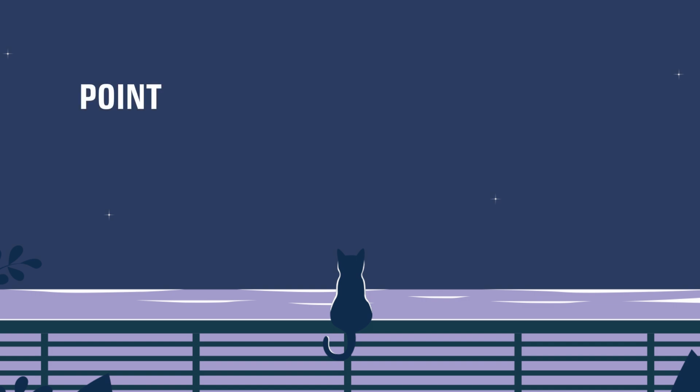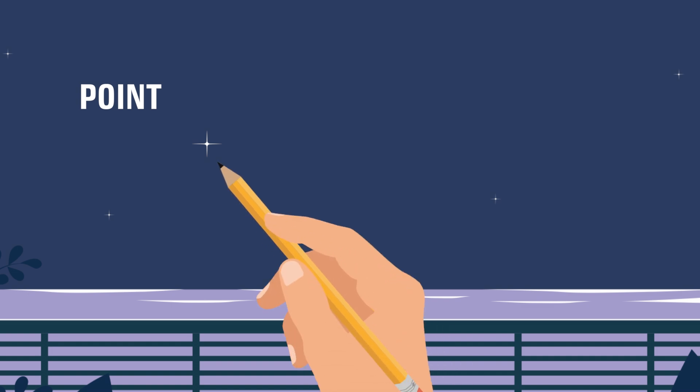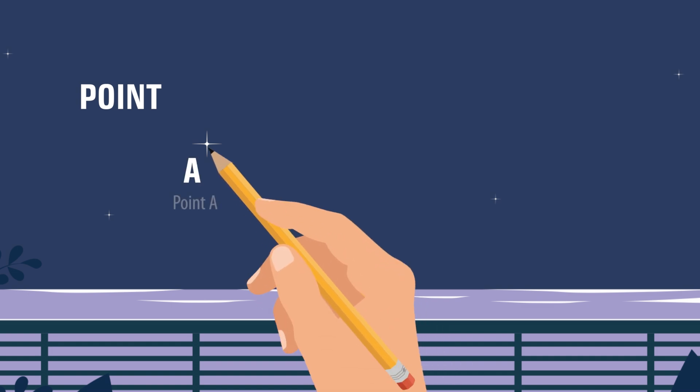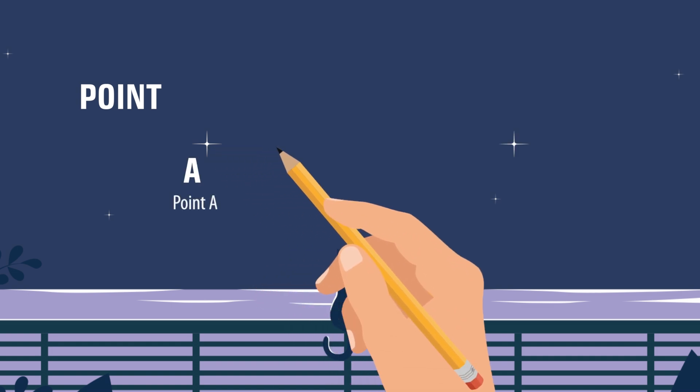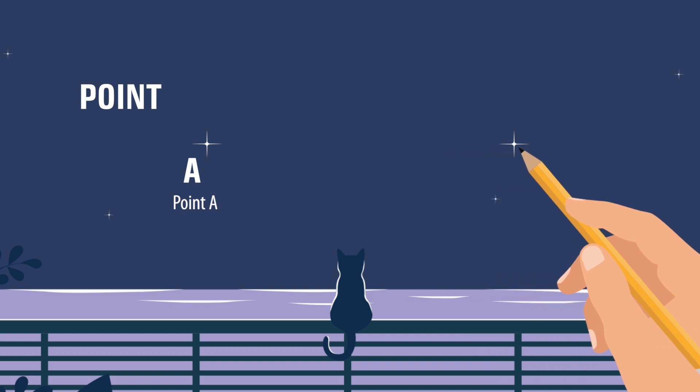What is a point? A point is an exact location in space. We have point A and point B.